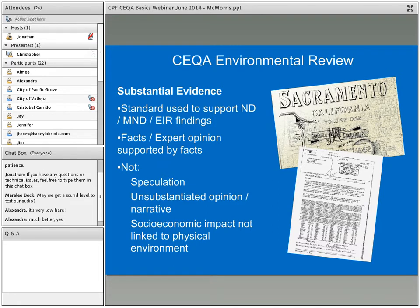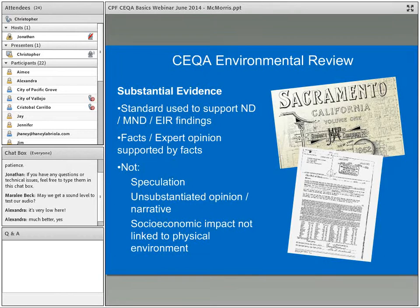The images shown include a Sanborn map and what appears to be a deed — illustrating what types of evidence might support findings. Substantial evidence is not speculation about what might be a historical resource or impact. It is not unsubstantiated opinion or narrative. It is also not related to socioeconomic impacts not physically linked with the physical environment, so things like property values cannot be considered part of substantial evidence.